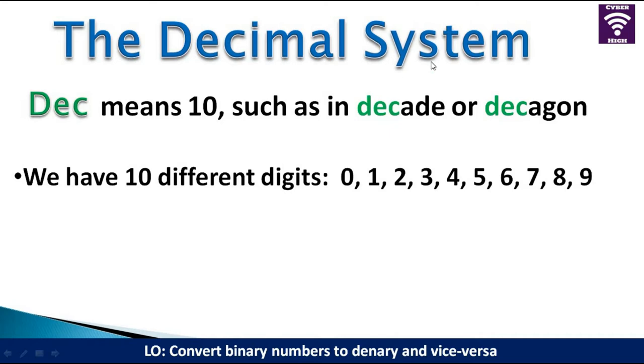So in the decimal system, which is also known as the denary system, we use 10 different digits from 0 up to 9. This is the normal counting system where we formulate numbers using these digits from 0 up to 9. For example, 19 is a combination of 1 and 9, 59 is 5 and 9, 220 is 2, 2, 0. So that is the decimal system.